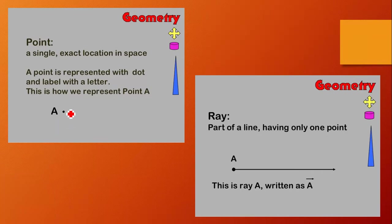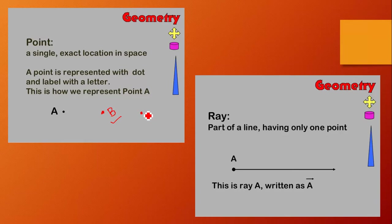Every time the point name won't be A. If I put a dot at a different location it may change its name. So here we have three points: Point A, Point B, and Point C.